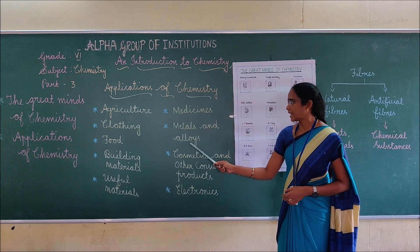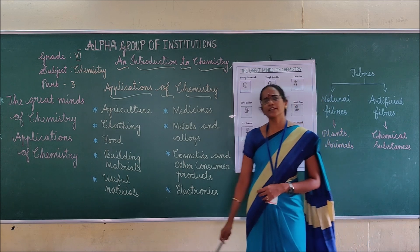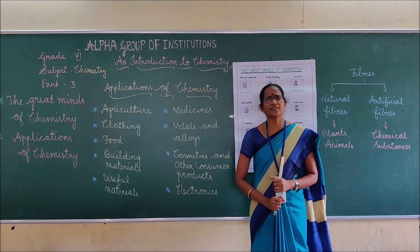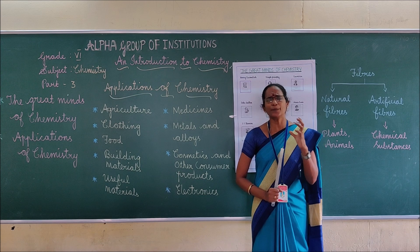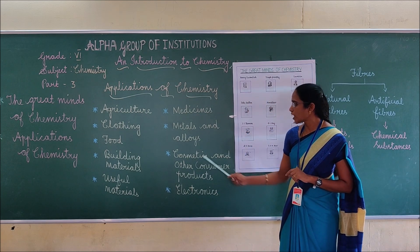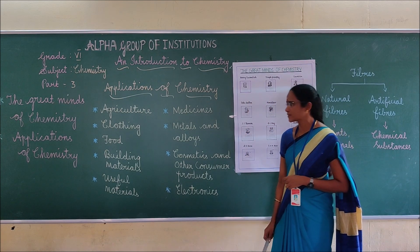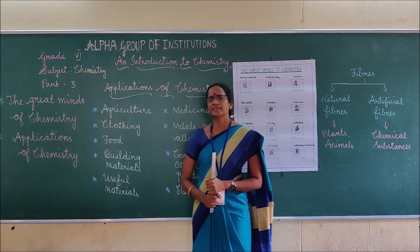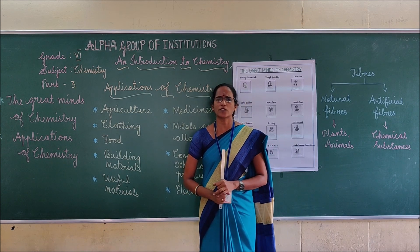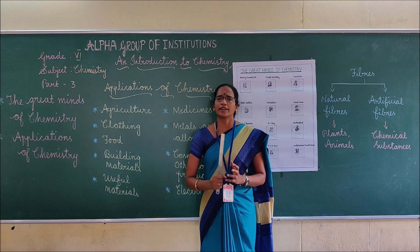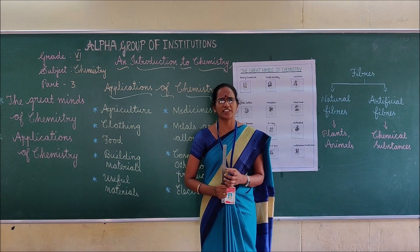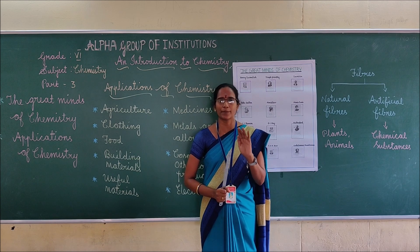Next, we can move to metals and alloys. Metals are extracted from their ores by chemical processes. The alloys of metals find application in many products such as machines, automobiles, etc. Next, we can move to cosmetics and other consumable products. We use cosmetics for beautifying appearance and for cleansing purposes. Some cosmetics like talcum powder, lotions, creams, lipsticks, eyeshadows, perfumes, and hair styling gels are all made by chemicals.